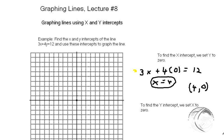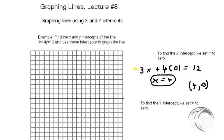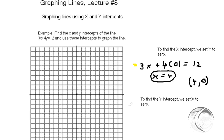Now to find my y intercept, we set x to zero. So I do the same equation, but I put zero in for x. So I write 3 times zero plus 4y equals 12.